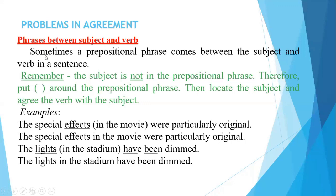Another important technique: phrases between the subject and verb. Sometimes a prepositional phrase comes between the subject and a verb. Remember: the subject is never inside a prepositional phrase. You must put brackets around the prepositional phrase, locate the real subject, and then make the verb agree with that subject. For example: 'Special effects [in the movie] were particularly original.' Cross out 'in the movie' — the subject is 'special effects,' which is plural, so we use 'were.'